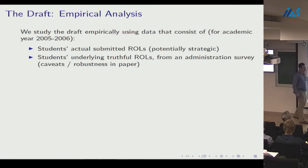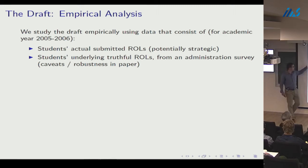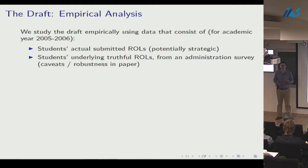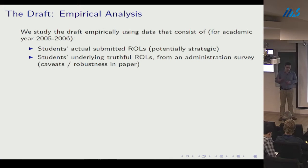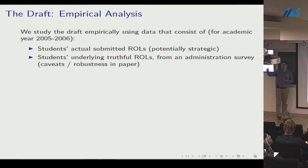We study the draft empirically using a powerful new kind of data. We have students' actual submitted rank-order lists — which are potentially strategic — the kind of data commonly available in market design. But we also have their underlying true preferences from an administration-run survey, so unlike in empirical IO analysis of auctions where you must infer true preferences from observed bidding, here we just have the underlying true preferences directly.